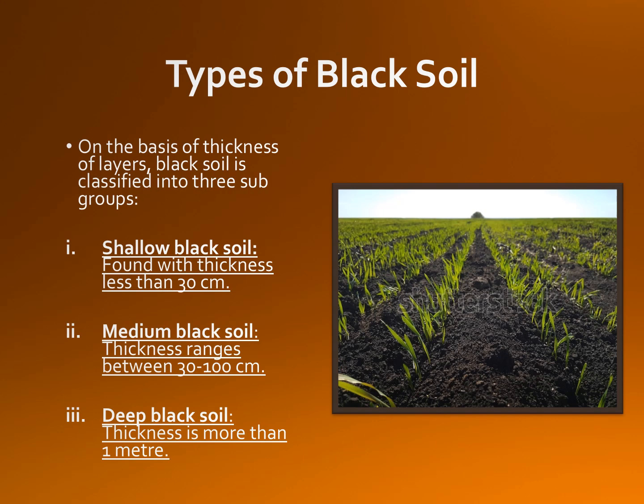Medium black soil has a thickness ranging between 30 to 100 centimeters. It covers a larger area in Maharashtra, Gujarat, Madhya Pradesh, and Andhra Pradesh. The third category is deep black soil, with a thickness of more than one meter. It covers large areas in lowland zones of Peninsular India. The clay content is between 40 to 60 percent, its reaction is alkaline, and it is fertile and suitable for crops of cotton, sugarcane, fruits, and vegetables.